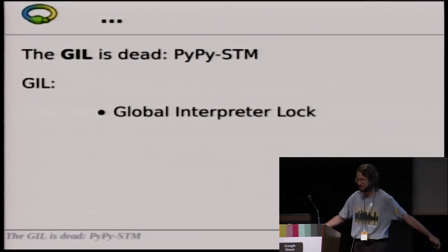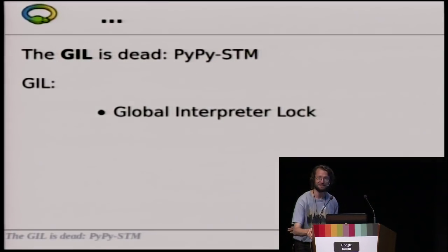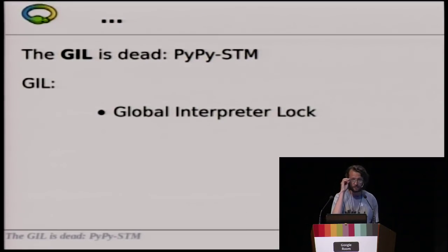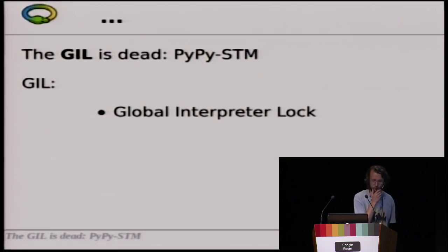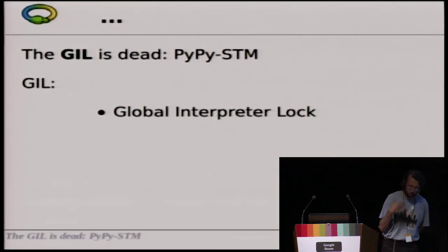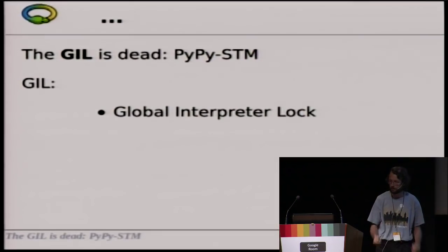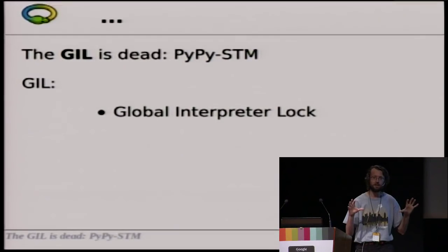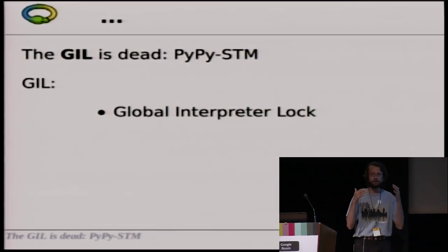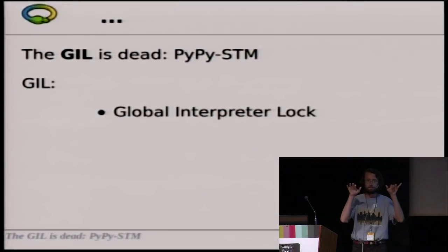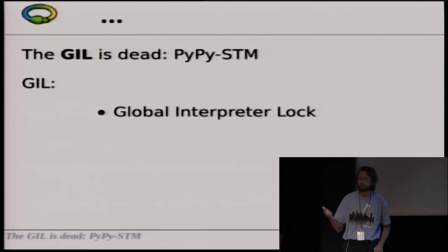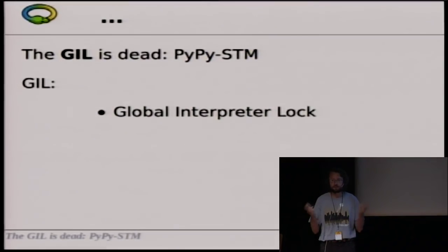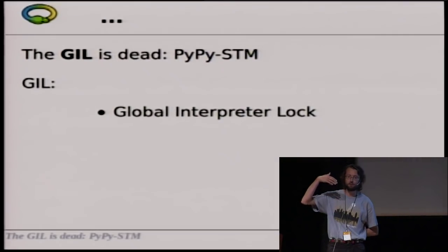So the GIL is dead, or that's what I pretend. The GIL, the global interpreter lock — it is simply a lock that in the CPython or PyPy implementation of Python, it is one global lock that needs to be acquired in order to run any Python code. So Python code can run only if it has the lock, which means if you are writing a Python program using multiple threads and all these threads are trying to do some CPU-intensive computations, then actually only one of them will run at a time.